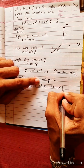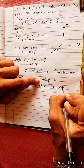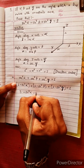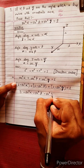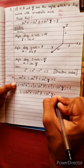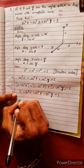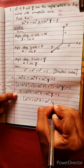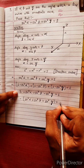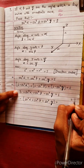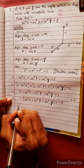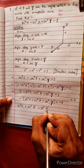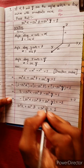Expanding: 1 + 1 + 1 minus sin²α minus sin²β minus sin²γ equals 1, so 3 minus (sin²α + sin²β + sin²γ) = 1. Therefore, sin²α + sin²β + sin²γ = 2. This completes the proof.